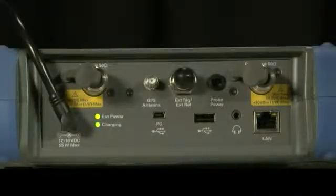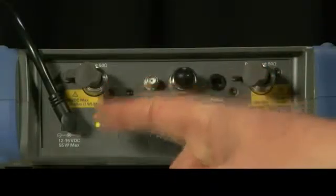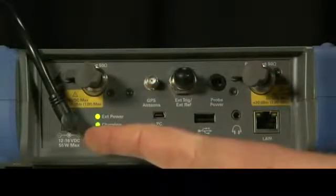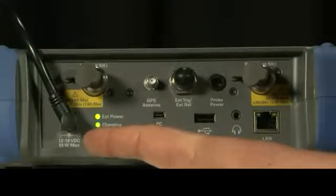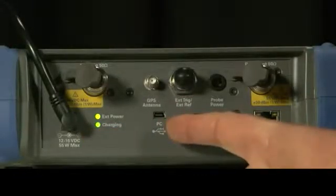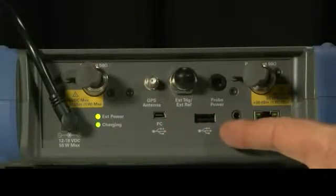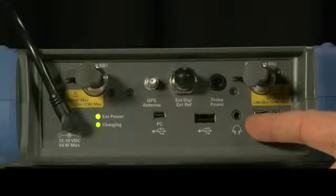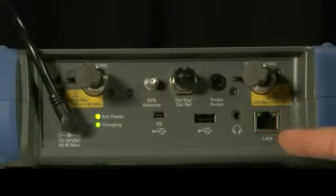On the top panel, we have the main RF input, the DC jack for externally powering the instrument or charging the internal battery, a small USB connector for connecting the instrument to a PC, a large USB socket for a USB memory stick, and audio headphone out for listening to demodulated audio, an Ethernet connector to connect the instrument to a local area network.